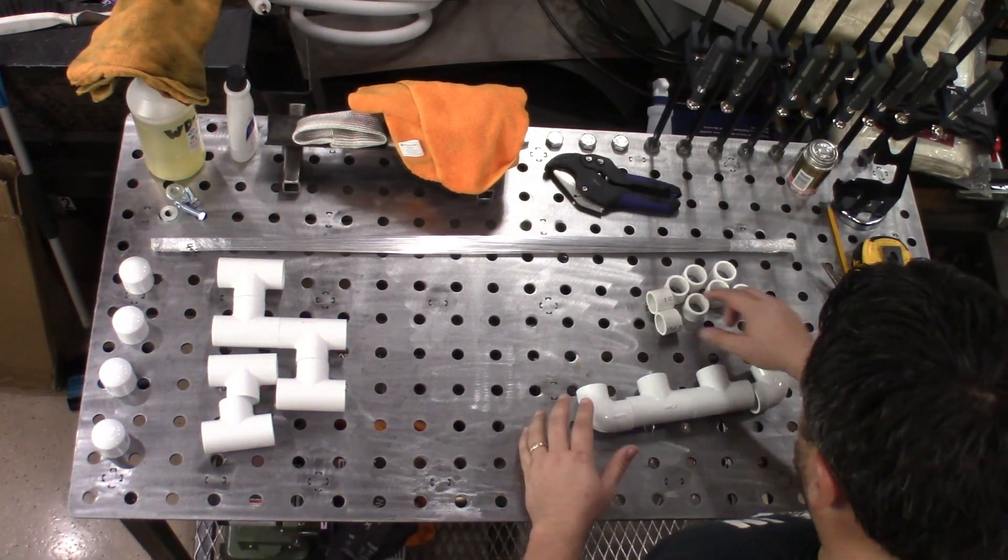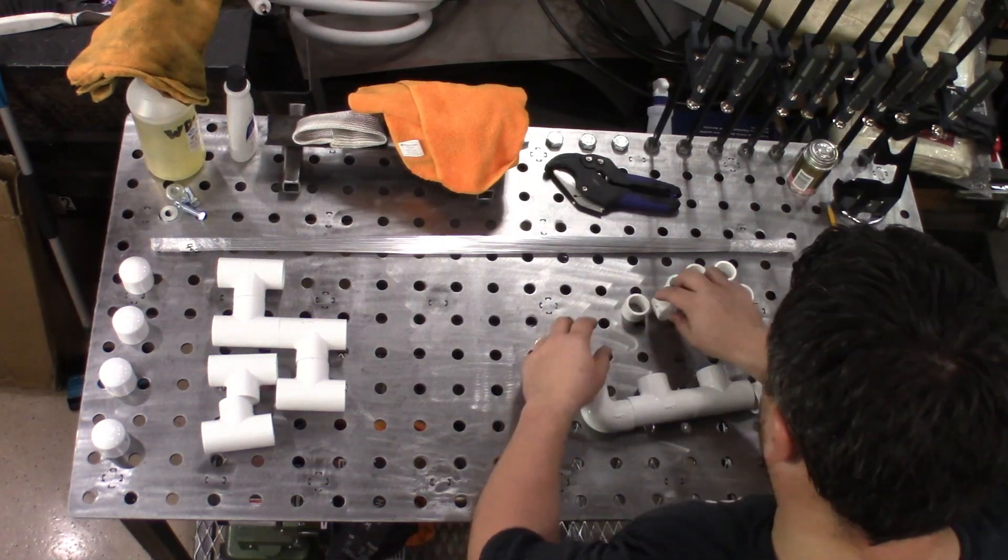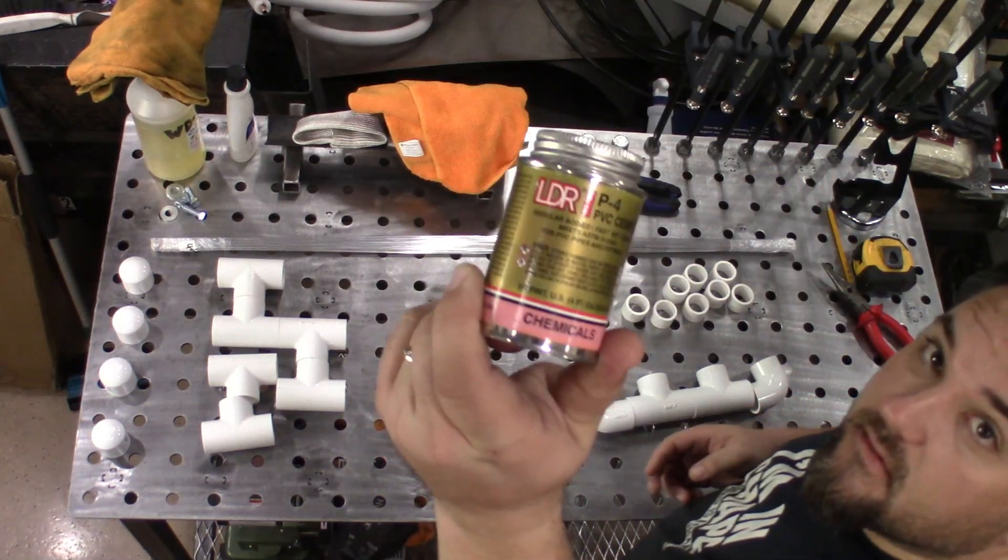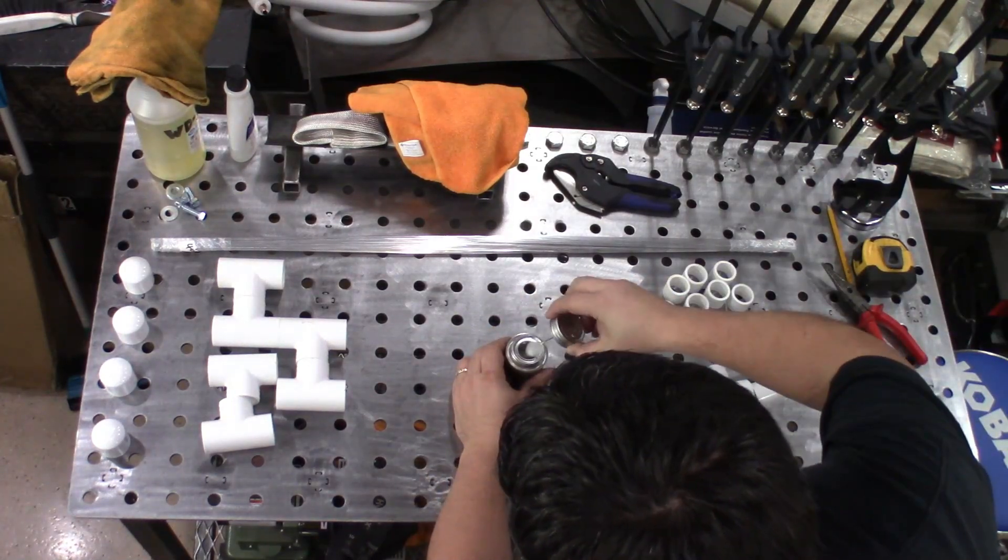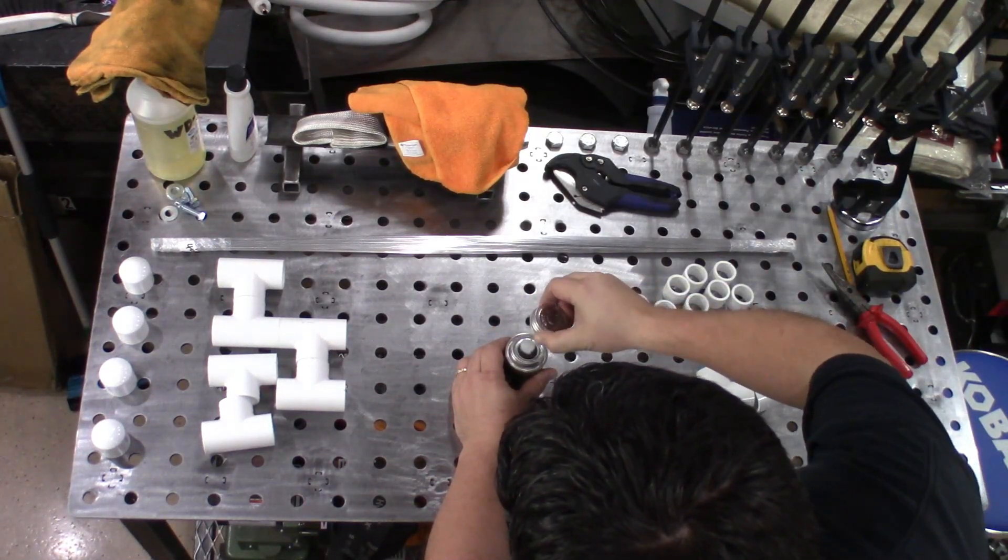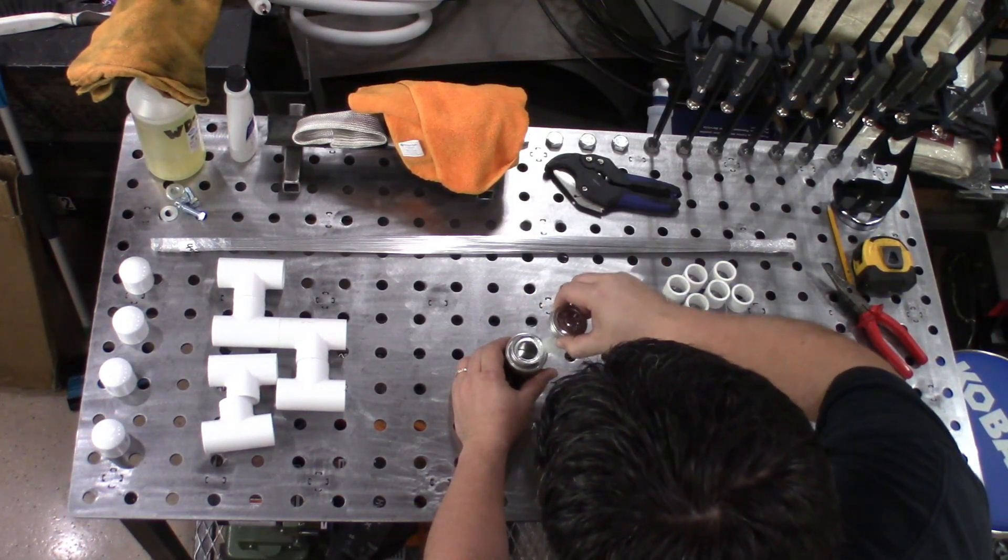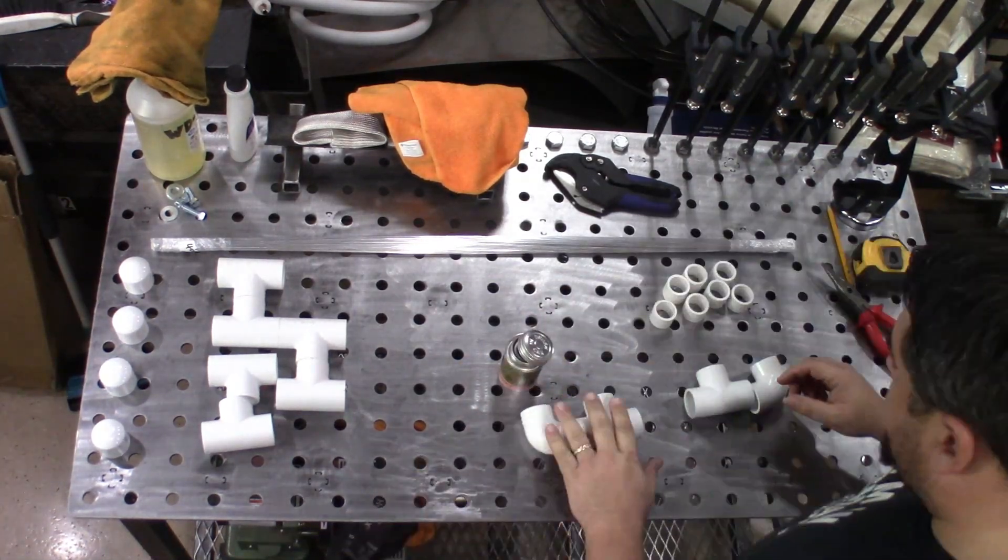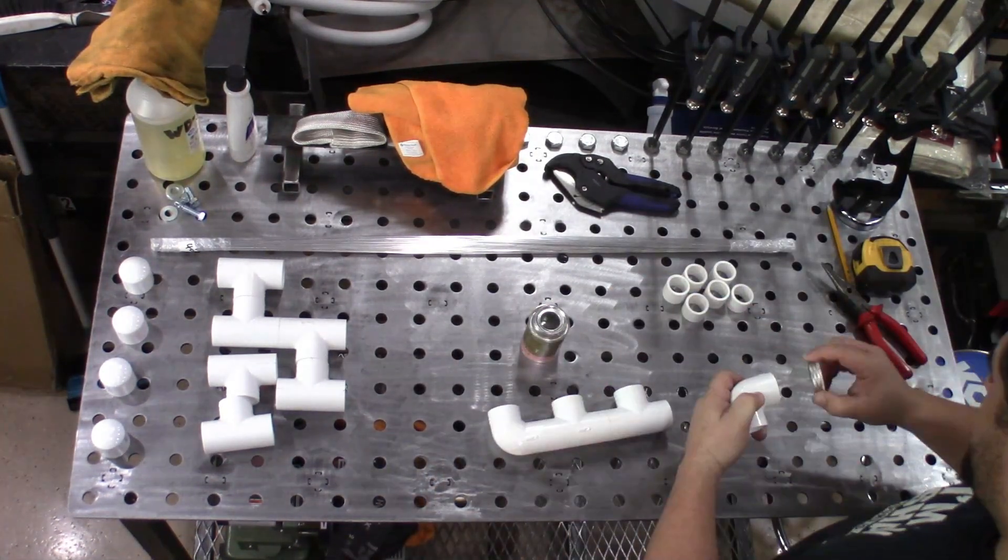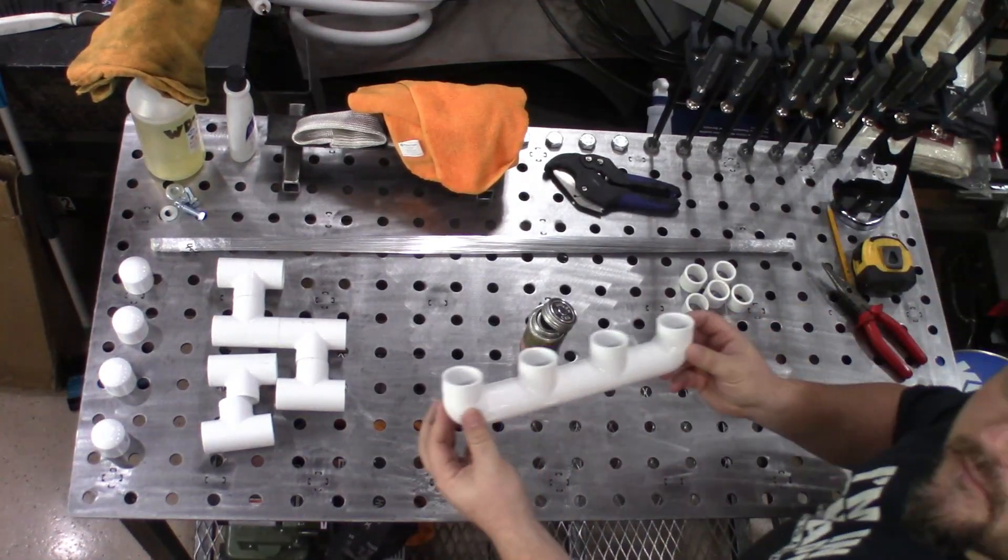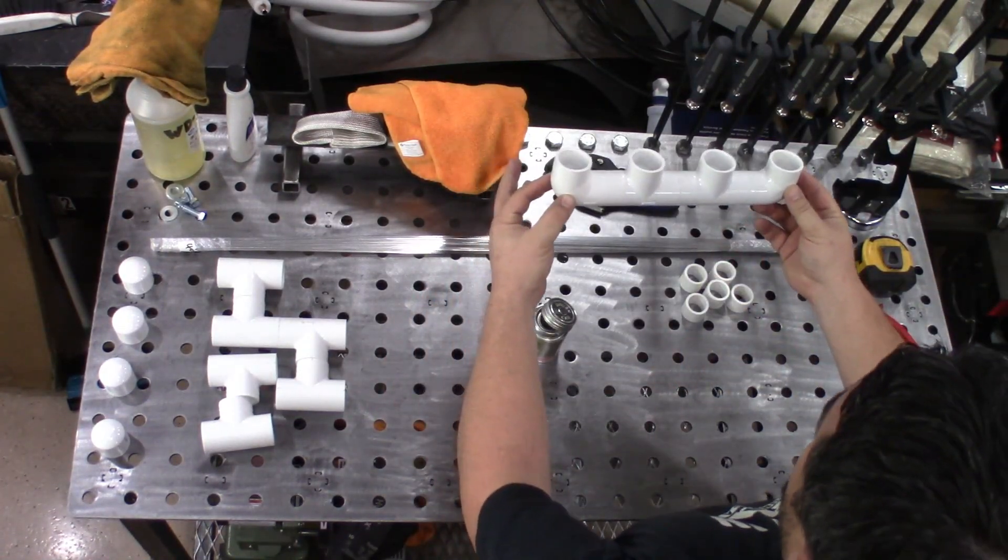First going to glue all these together using the one inch PVC pipe here. Got some PVC cement. I don't need a lot. This is not going to be high stress at all. We got this all done. This is the bottom piece now.